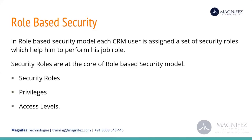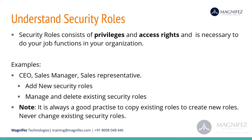Every security role includes two things: one is privileges and the second one is access level. We are going to explain what a privilege is and what the access level is. Some examples of security roles are CEO, sales manager, sales representative, etc. A security role itself cannot do anything — similar to a business unit — we have to create users and then assign them to perform operations.